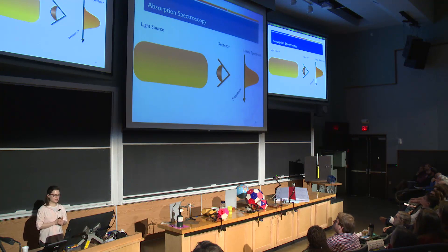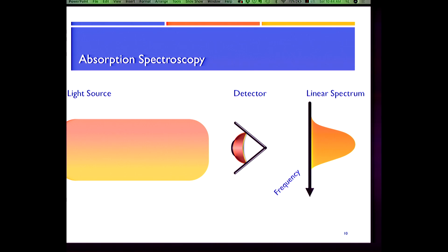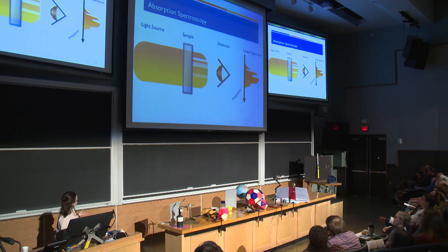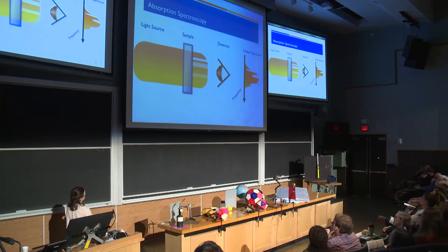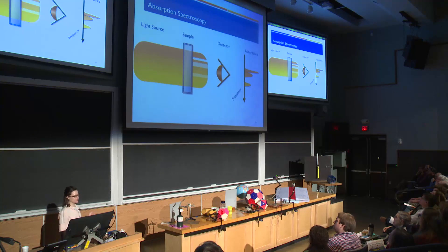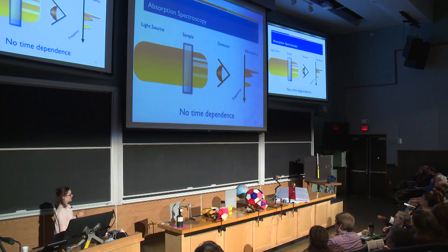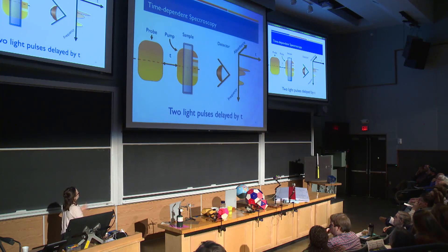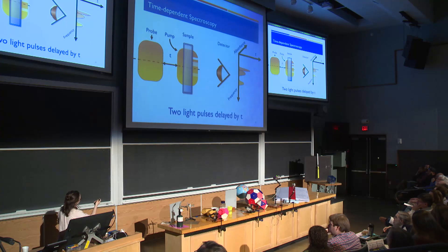One of the most basic types of spectroscopy we can do is absorption spectroscopy. We have a light source incident on a detector, and we can look at the amplitude of this spectrum as a function of frequency. If we want to look at some sample, we can stick it in the beam and see where the transmittance has changed — a dip in the transmittance indicates where the sample absorbs. Comparing spectra with and without the sample gives us an absorption spectrum. But this doesn't tell us anything about time dependence in our samples. To look at the time dependence, we can start using pulsed light — using two pulses with some time delay, and look at how the absorbance changes with this time delay.